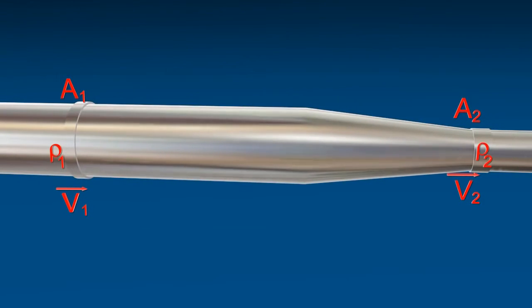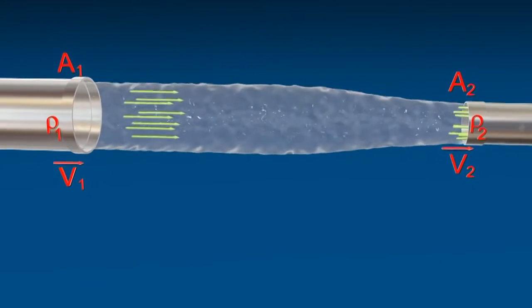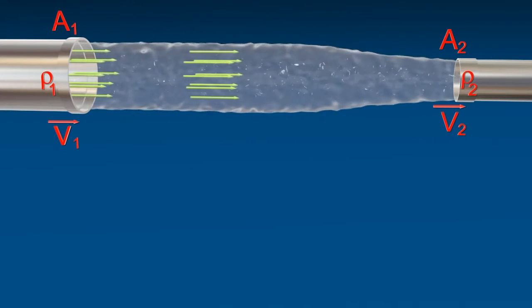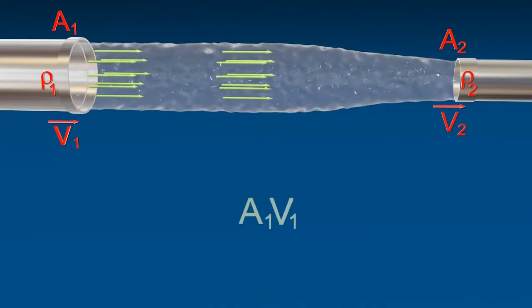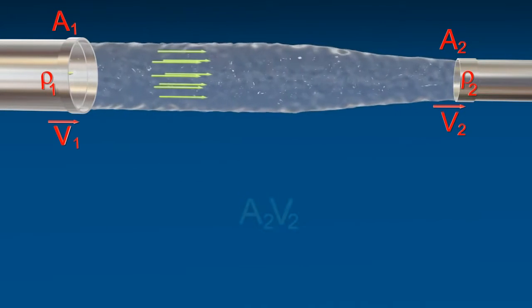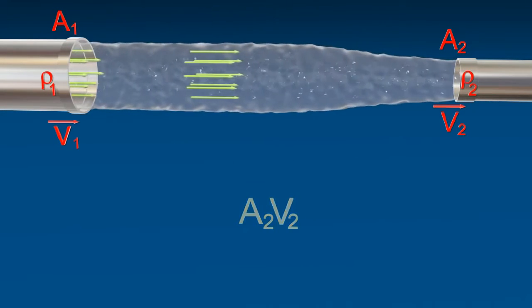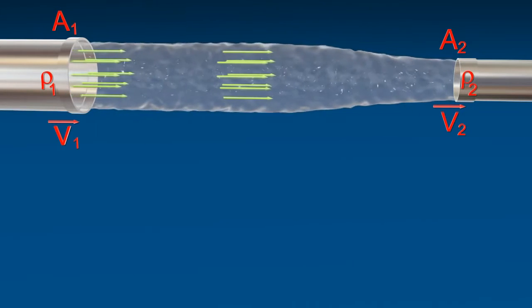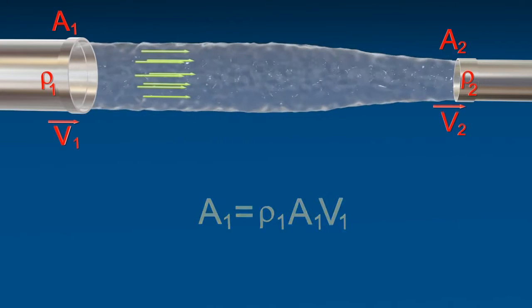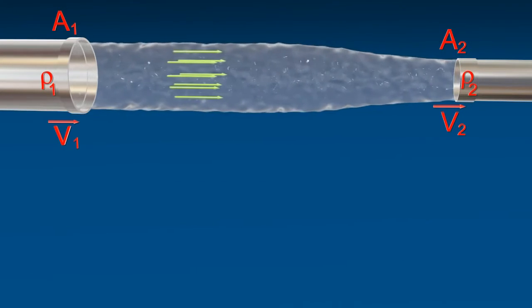Consider a fluid moves through a tube of area of cross section A1 and A2 respectively. The volume of water entering A1 per second and the volume of water leaving A2 per second. Therefore, mass of liquid entering per second at A1 and mass of liquid leaving per second at A2.